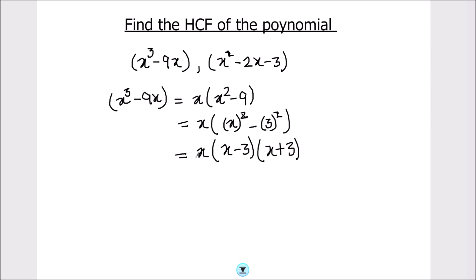That is (x - 3) and (x + 3). So we got the factors of this polynomial as x times (x - 3) times (x + 3).